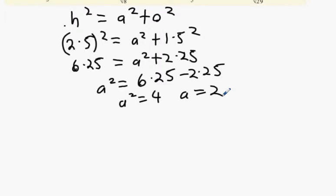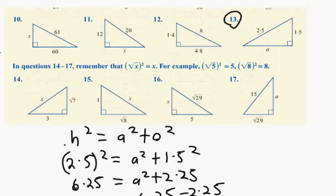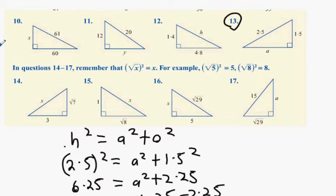If you've got an answer bigger than 2.5, you know you're wrong because it has to be smaller than 2.5. Then the next thing they might try and trip you up with is surds. So if I did the likes of question 16.